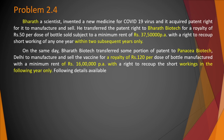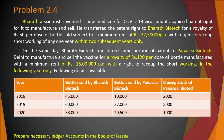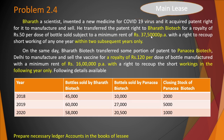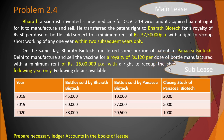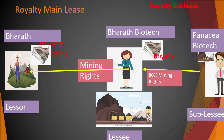So here it's again floating short working recoupment — only in the immediate next year they can recoup the short working. They are given the following additional adjustments: bottles sold by Bharat Biotech (the Lessee), bottles sold by Panacea Biotech (the Sublessee), and the closing stock of the Sublessee. You are required to prepare necessary ledger accounts in the books of the Lessee.